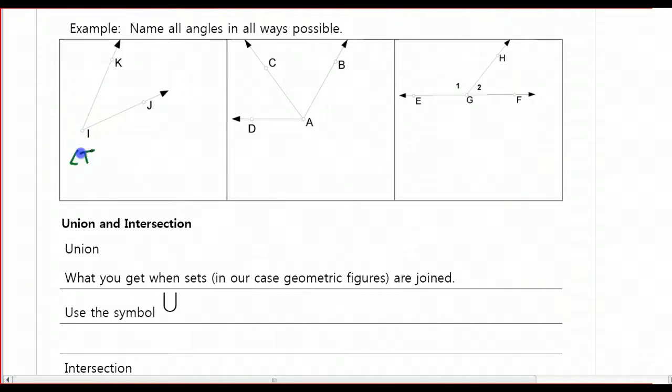There's a couple different ways we can name it. Since there is just a single angle, we could call it angle I, and that would be sufficient. Or we could use three of the letters, making sure that the vertex is always the middle letter. So we could call it angle KIJ, or we could flip those letters around and call it angle JIK.